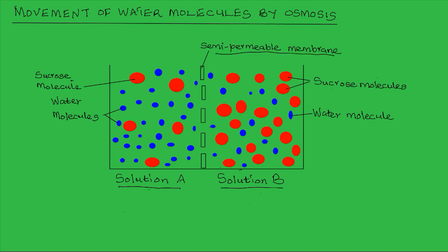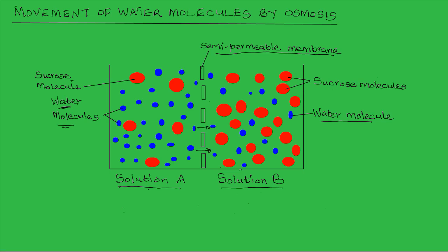Solution A has a higher concentration of water molecules compared to solution B. Therefore, water molecules will flow from where they are highly concentrated in solution A, across the semi-permeable membrane, to solution B.